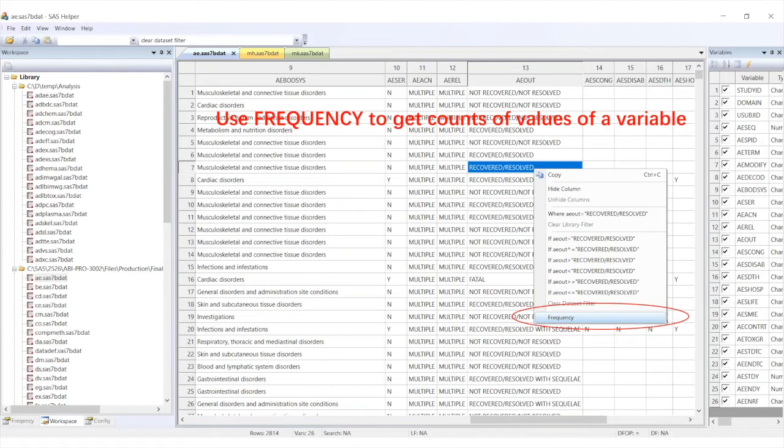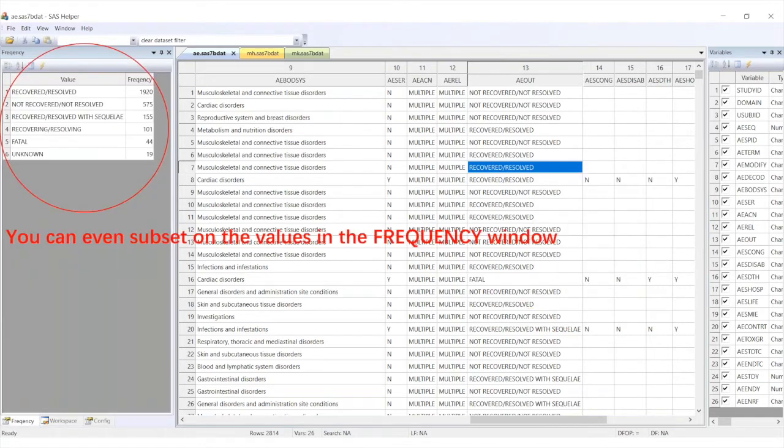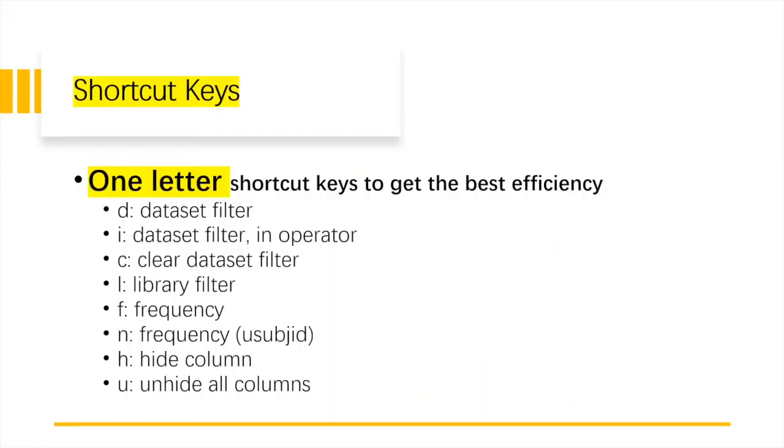Here's the screenshot for frequency. This is the frequency window. From here, you can do a subset.